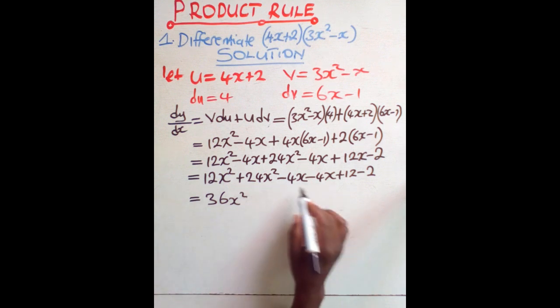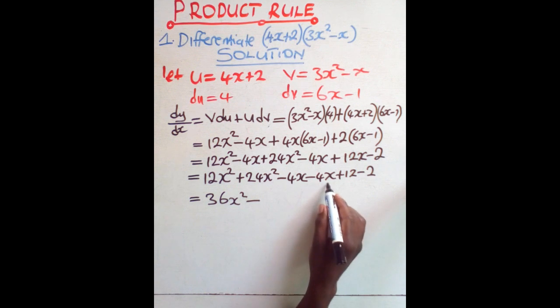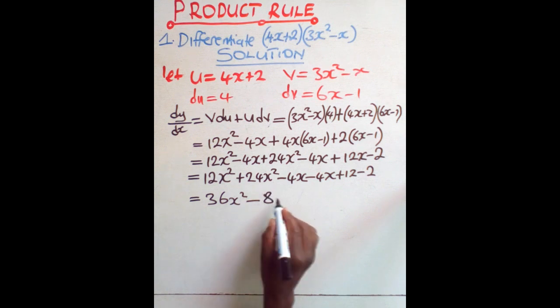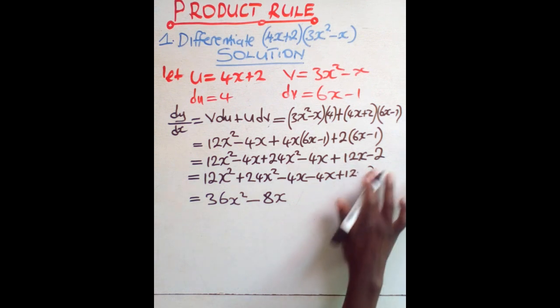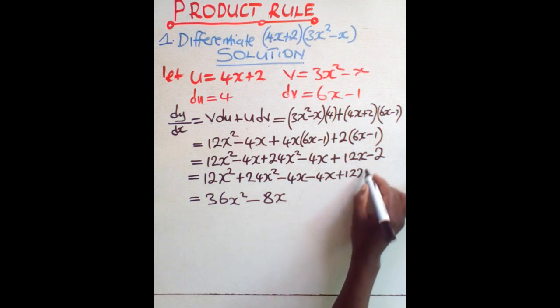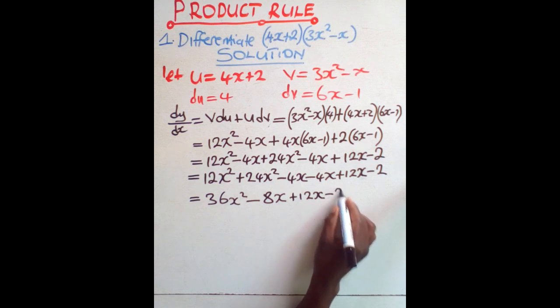When this is 36x squared, what about these two? This is negative 4, but there is x. So it means these two only will give us negative 8x. Then there is x there, there is x there, there is x here. So please, I made a mistake there. There is x in minus 2.